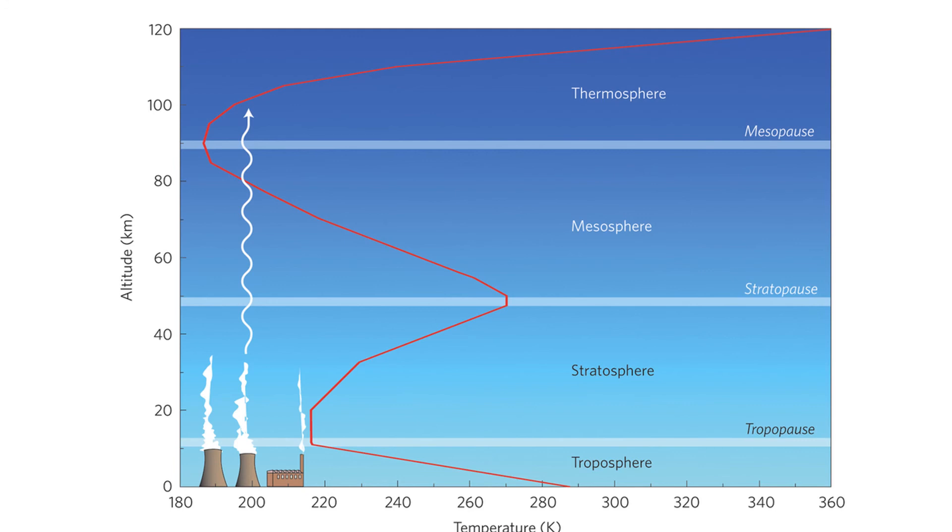And so this layer is very aptly named the thermosphere. However, the gas molecules are so far apart that its temperature in the usual sense is not very meaningful. It would not feel hot to a human in direct contact because its density is too low to conduct a significant amount of energy to or from the skin. Then the temperature starts decreasing again in the exosphere.